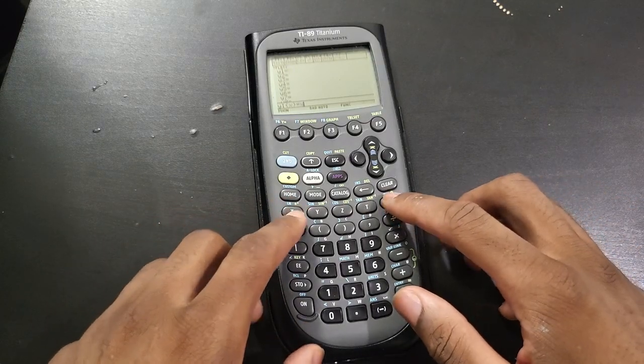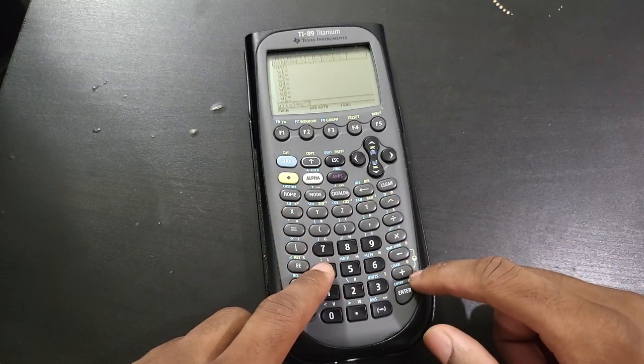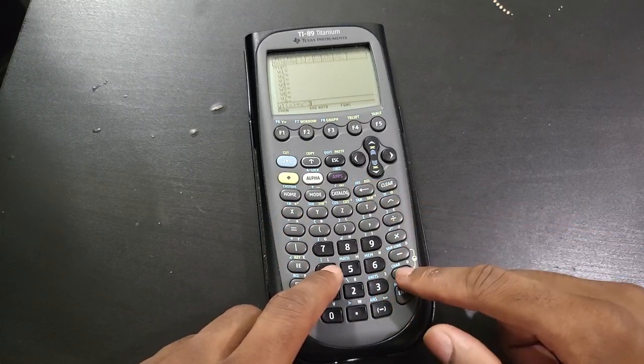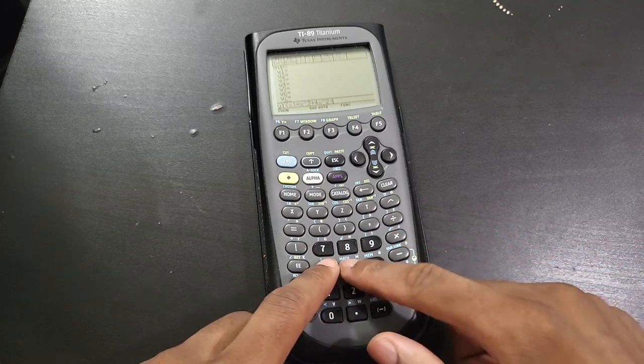If we go ahead and graph a third degree polynomial, this is just an example, let's do 4x squared minus 5.